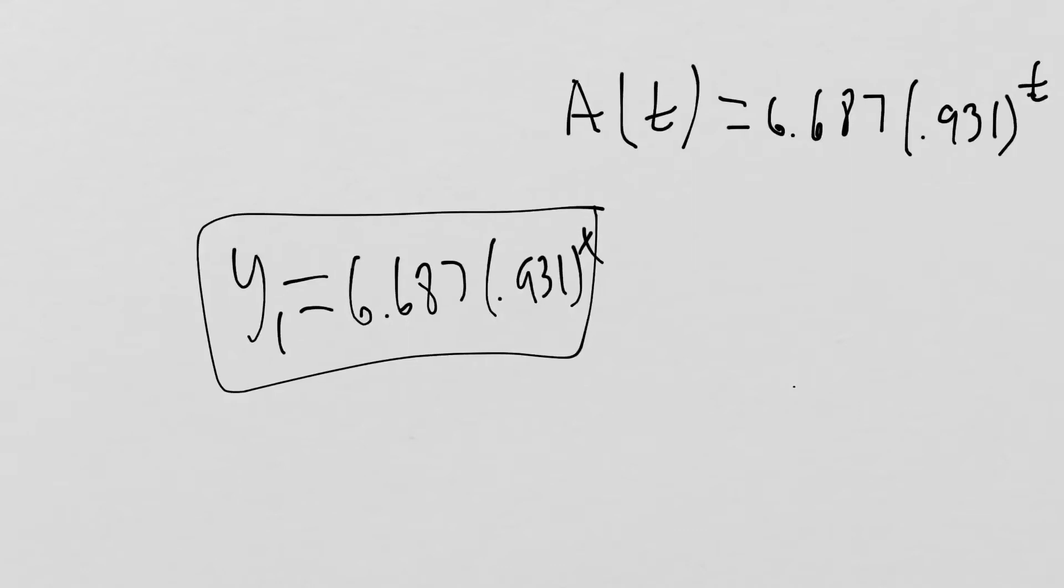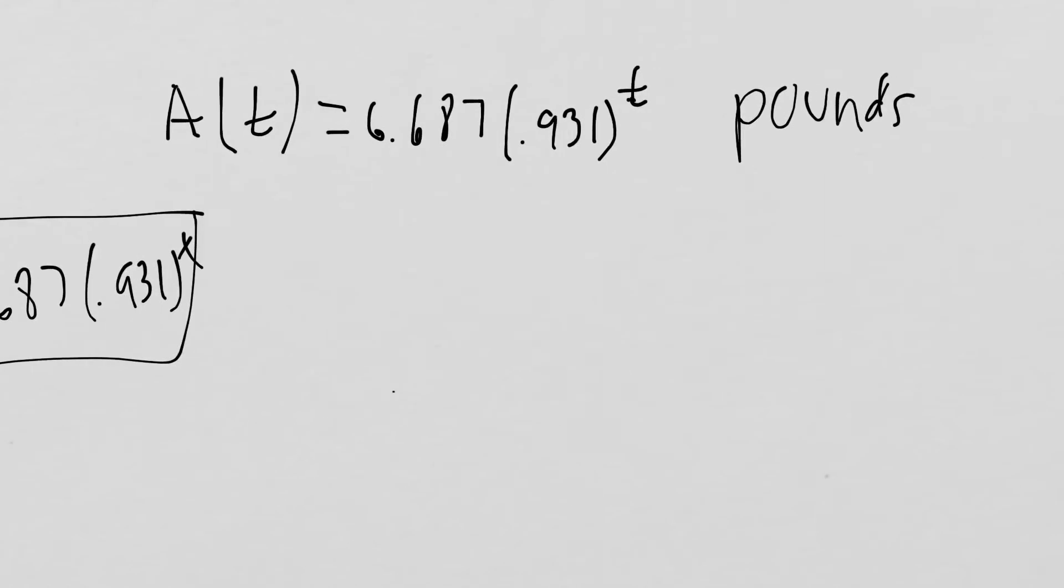The first part asks us to find the average rate of change over the course of the 0th day to the 30th day. So what we're going to do is A(30) minus A(0) over 30 minus 0.